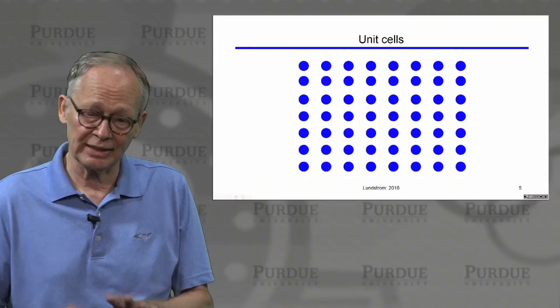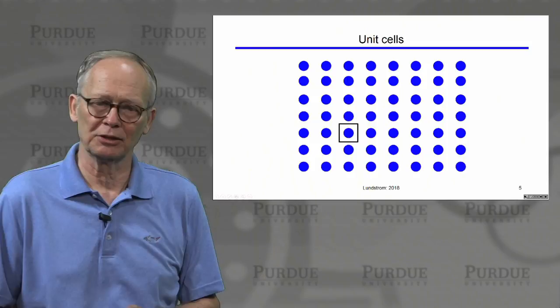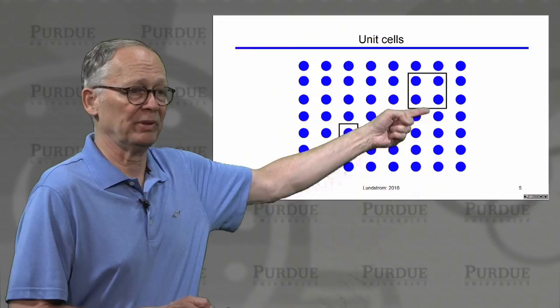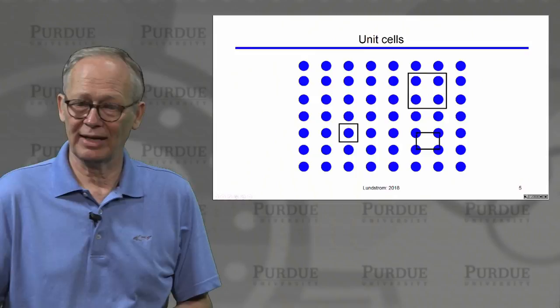One important concept is what we call a unit cell. A unit cell is the smallest unit that can be used to reproduce the entire crystal simply by translating it. This is one unit cell — you can see we could build up the entire crystal from it. Here is another unit cell. We could replicate this cell to build up the entire crystal. And here is another unit cell where one quarter of each atom is on the corner of a rectangle, and we could produce the entire crystal lattice that way.